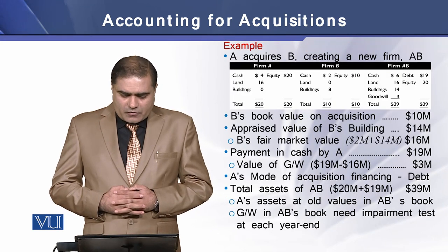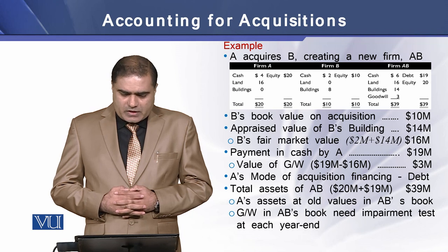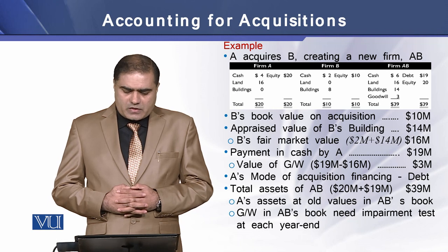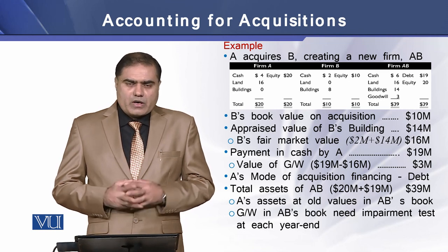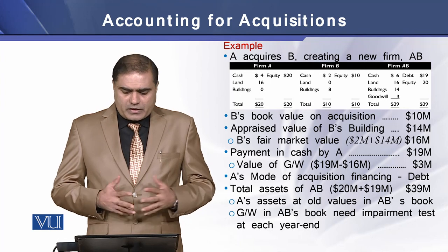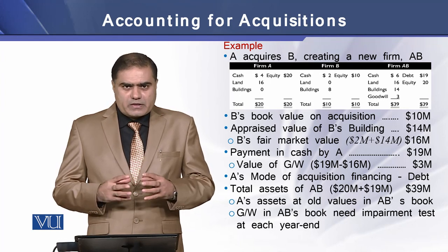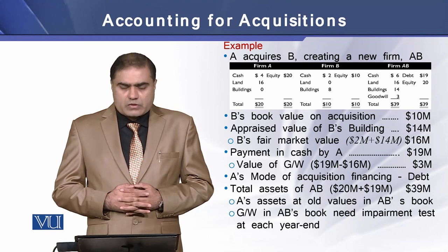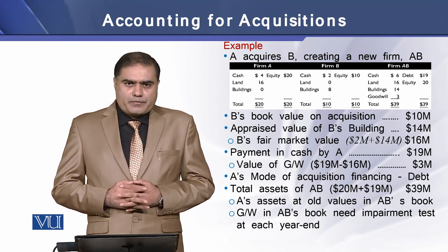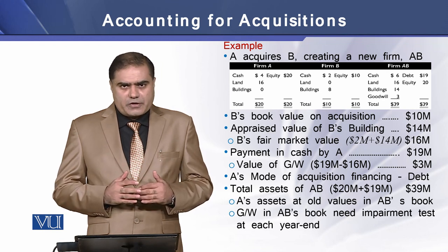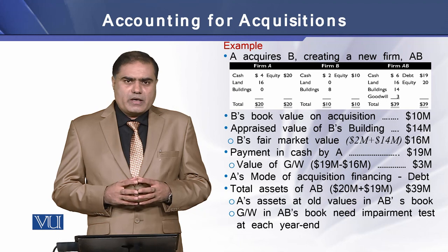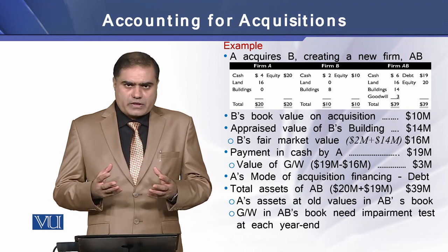Let's see an example where A acquires B, creating a new firm AB. B's book value at acquisition is $10 million, whereas an appraiser has estimated $14 million for the building of B. This means the fair value of B's total assets is equal to $16 million, which is the sum of the $14 million fair market value of the building and the existing $2 million of cash.